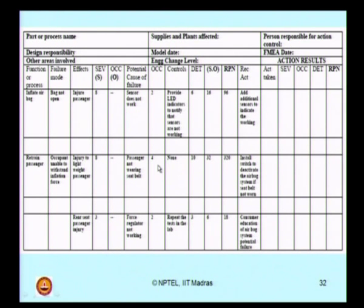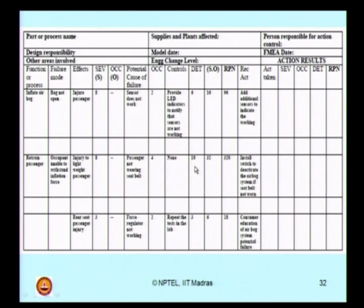For wearing a seat belt, you may not provide an LED alarm, but you can always give a siren or a system which is present. However, I am not taking any advantage of that control mechanism provided. The detection can be physically rated out of 10 scale, because you really know whether you are wearing a seat belt or not physically. So the RPN number for this can be a very high order of 320.